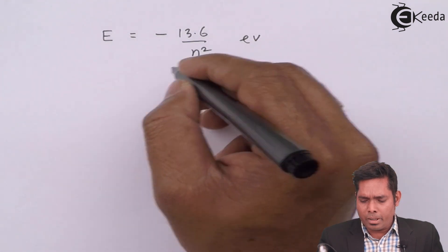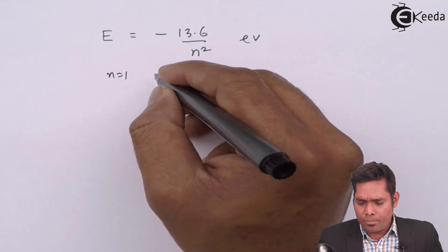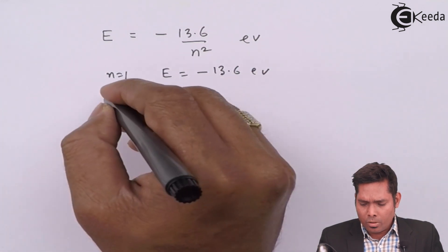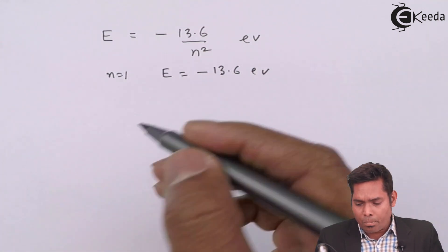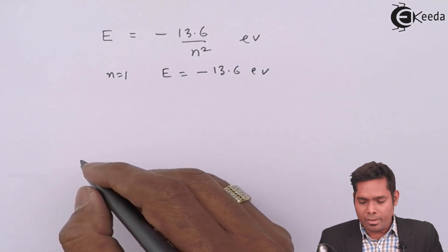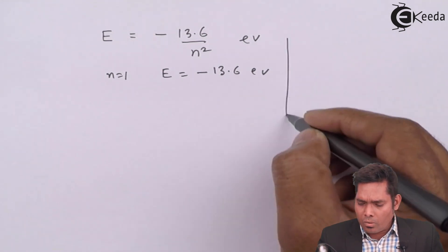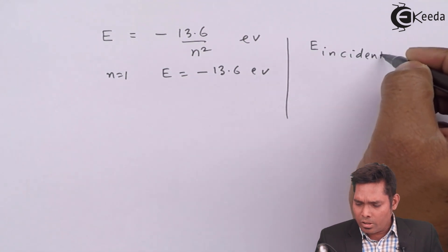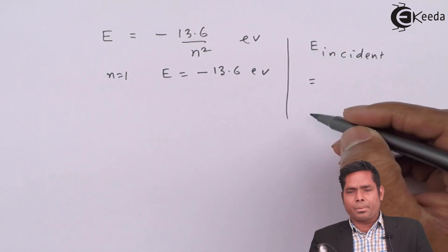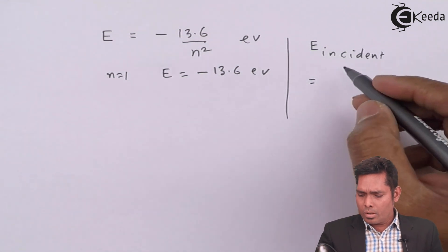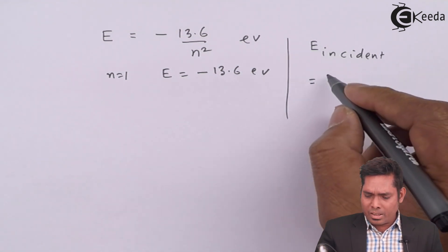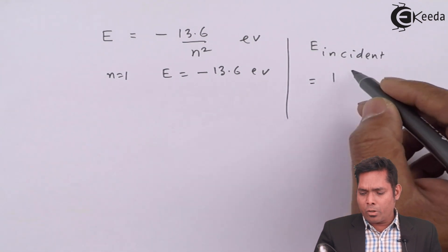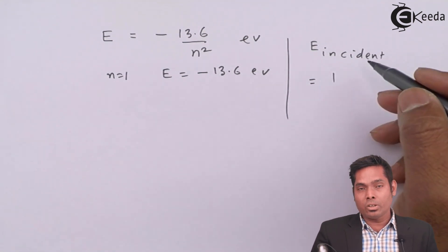So for the first orbit, n is 1, when n is 1, we have E equals to minus 13.6 electron volt. But how much energy we have supplied, that we have to first find. Now, the energy that is incident is how much? This is given by the expression. How much is the expression? The expression is, if I want to convert energy of wavelength into energy,